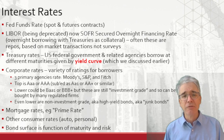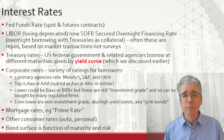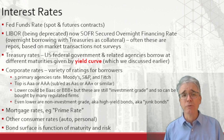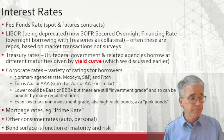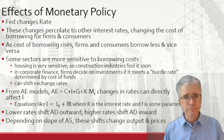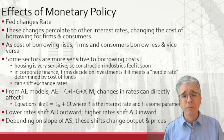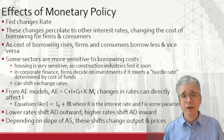Then there are different mortgage rates — for example, the prime rate, which is the rate the bank will charge to prime customers. Others might pay more. There are other consumer rates for auto loans, personal loans, student loans, etc. We can think of a whole surface of bond prices or interest rates, depending on maturity and depending on the risk. Monetary policy will change some fundamental interest rate, and those changes percolate to the other interest rates in the economy.